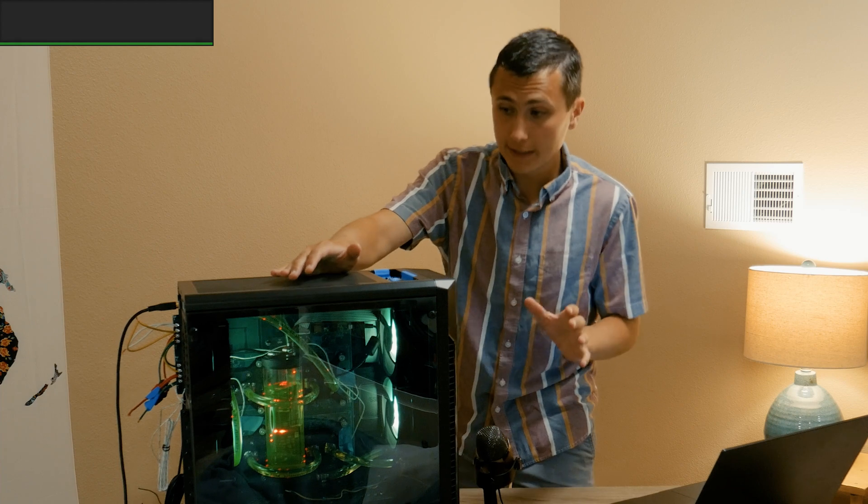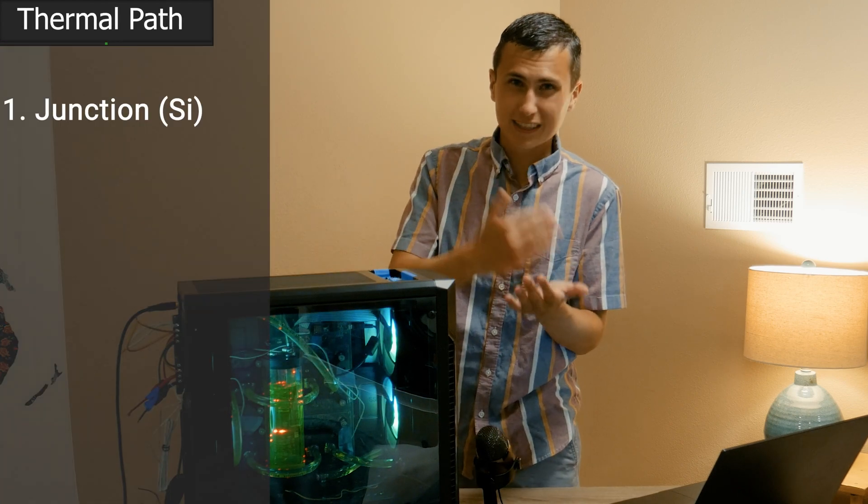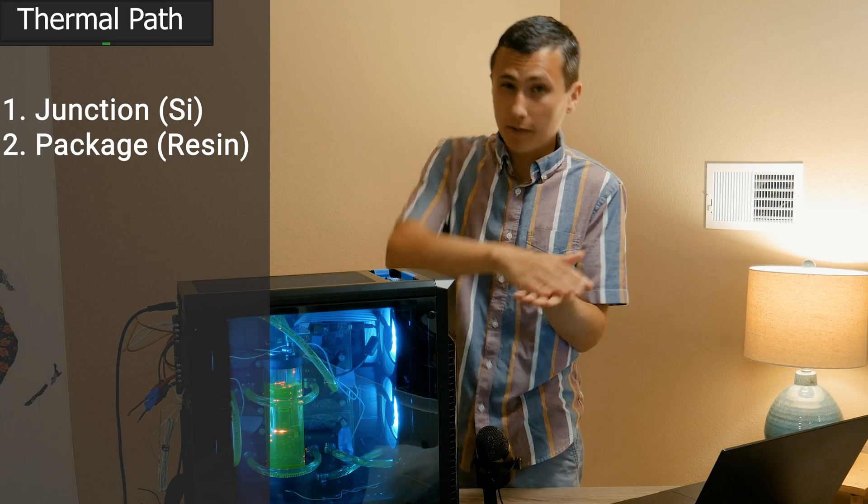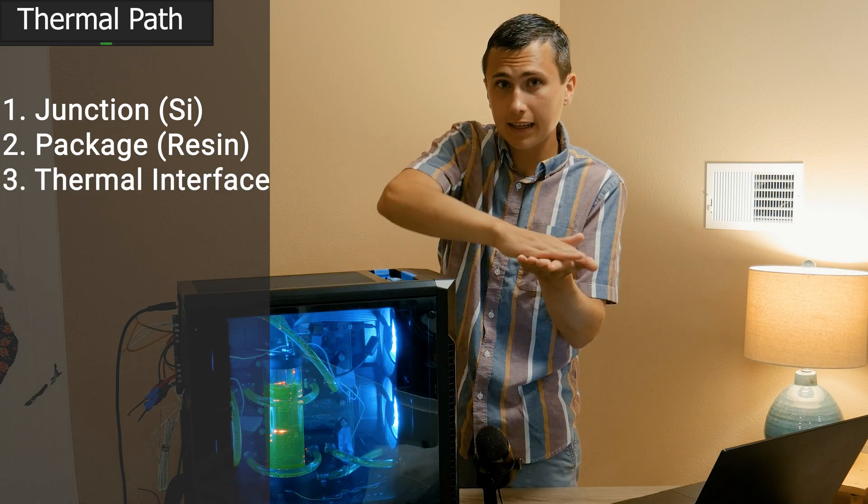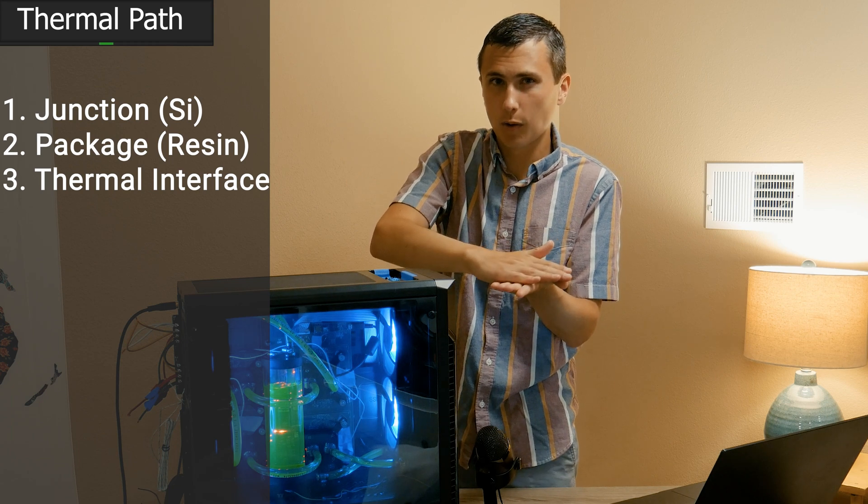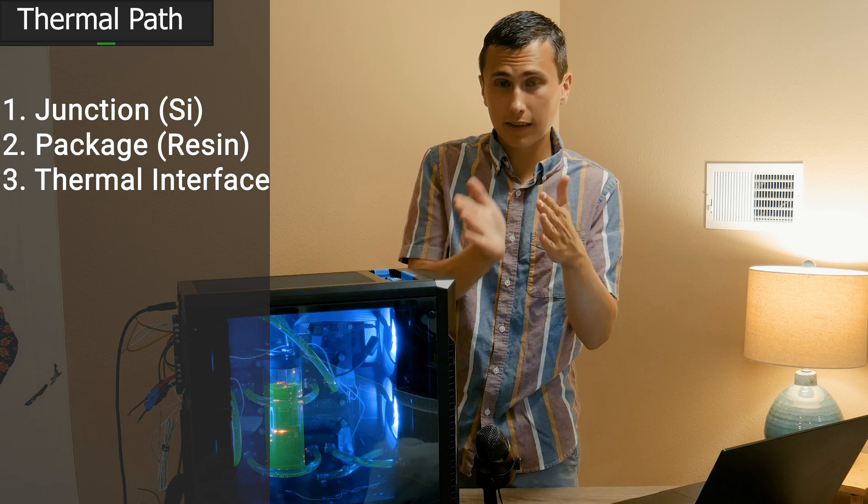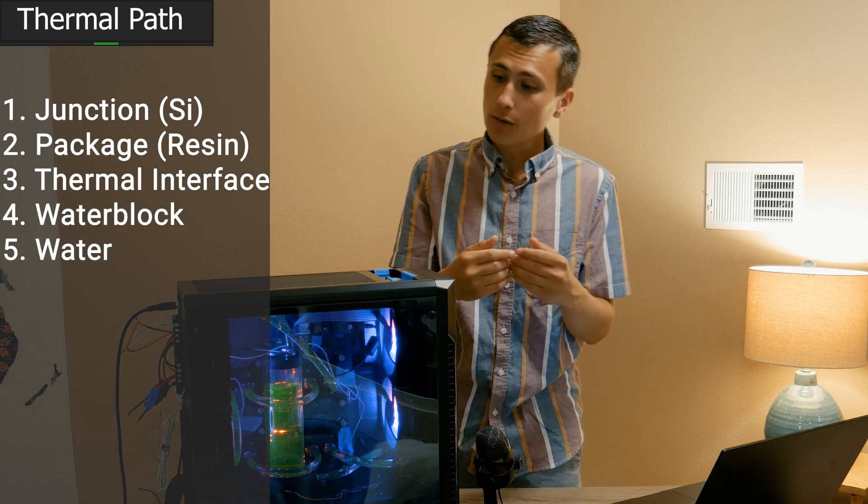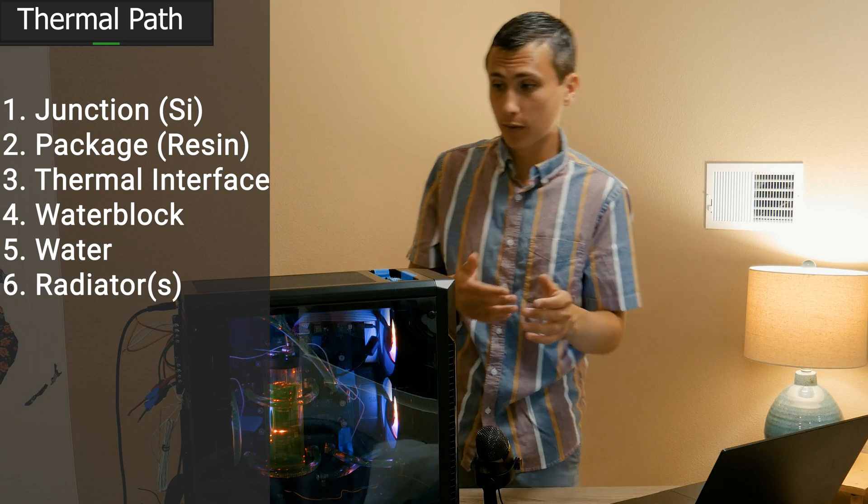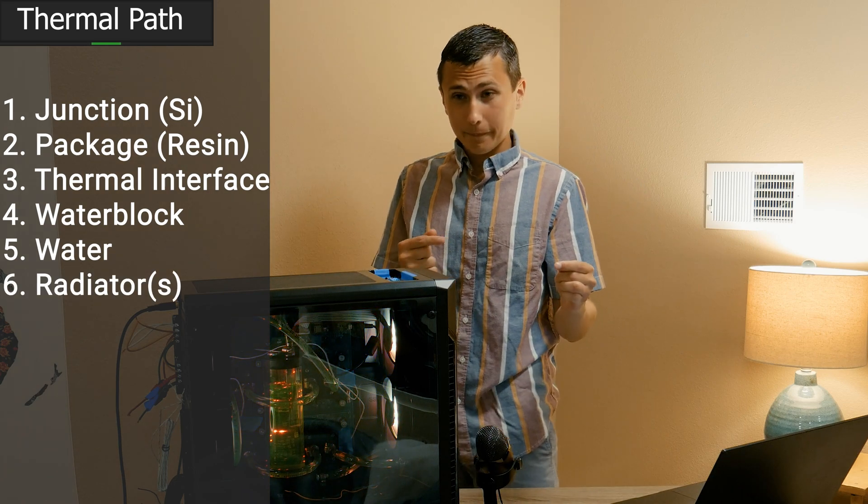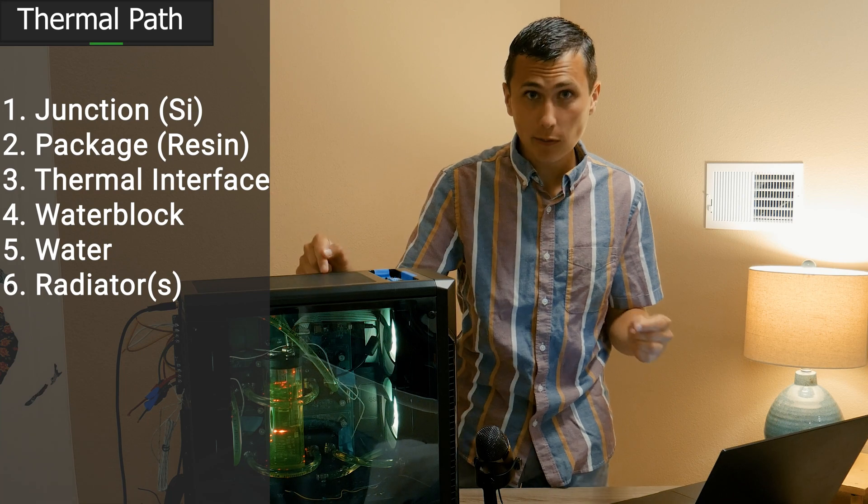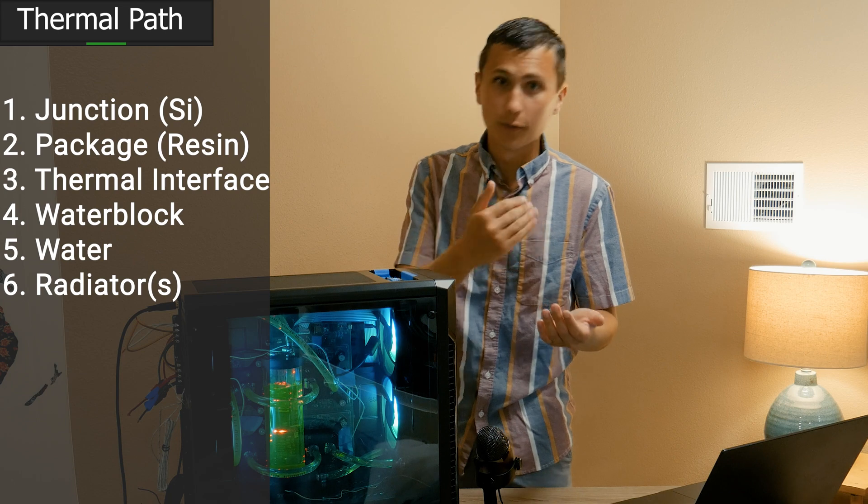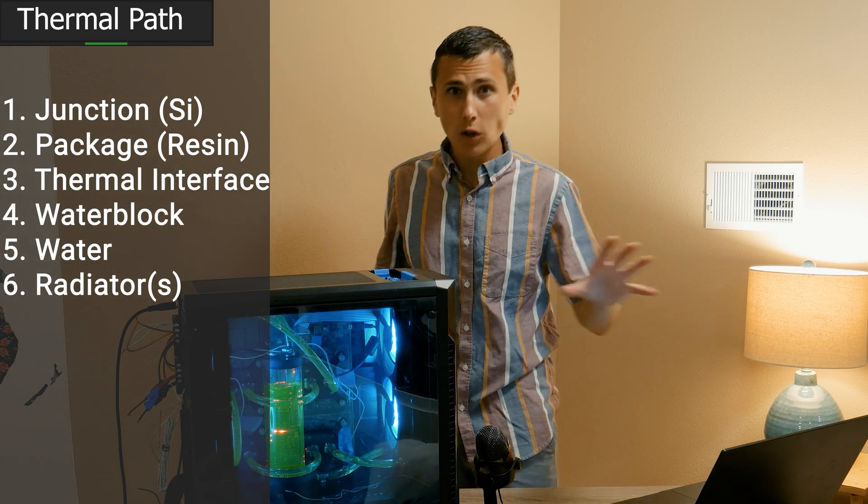And now there's a lot of interfaces that need to happen there, right? So we're starting at the junction, the silicon. Then it needs to get through the package to the edge of that package. Then we've got our thermal interface material, that insulating high performance alert material that we talked about before. And then from there, we've got the copper of the water block. Then we've got the water on the other side of that water block. And then we've got the radiator with the fans blowing through it. So we need to get maybe 500 watts, maybe a thousand watts from that silicon through one, two, three, four, through a whole lot of junctions.